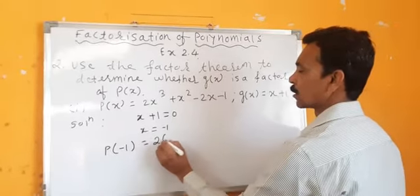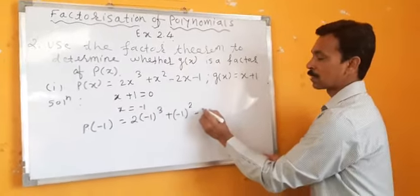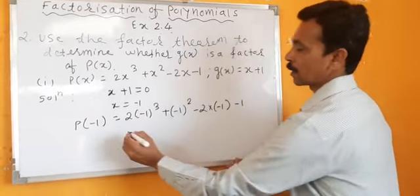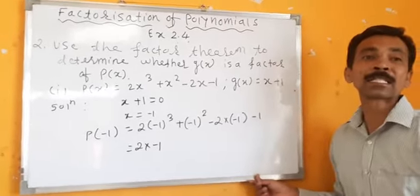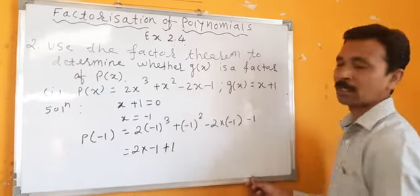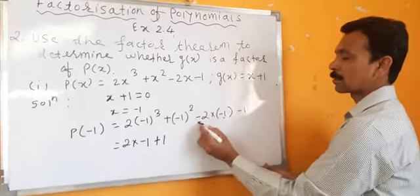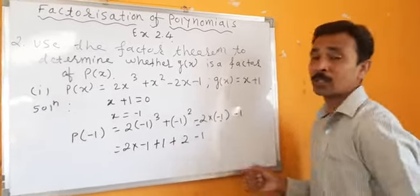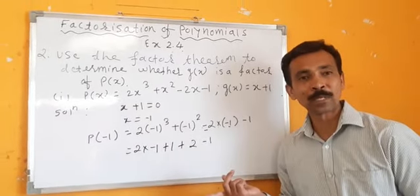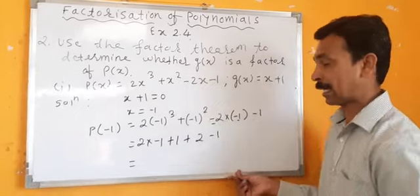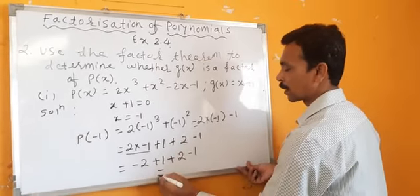P of minus 1 equals 2 into minus 1 cubed plus minus 1 whole squared minus 2 into minus 1 minus 1. Cube of minus 1 is minus 1, so 2 into minus 1 gives minus 2. Minus 1 squared is plus 1. Minus into minus is plus 2. So: minus 2 plus 1 plus 2 minus 1 equals 0.